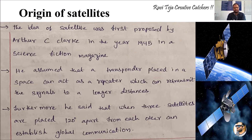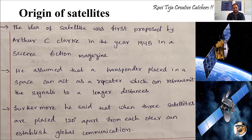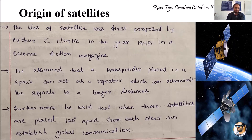The first idea of a satellite was proposed by a scientist called Arthur C. Clarke in the year 1945, in a small science fiction magazine. He assumed that a transponder placed in space could act as a repeater to re-transmit signals over longer distances. A transponder is a system which consists of both a transmitter as well as a receiver, which responds to incoming signals.